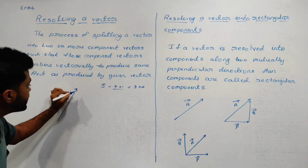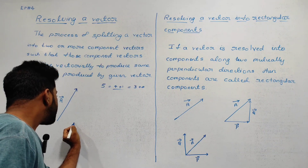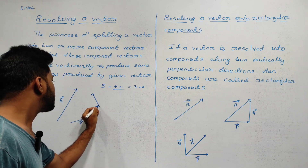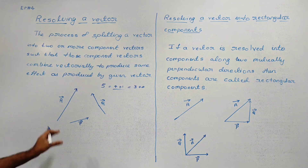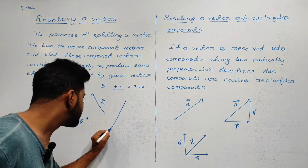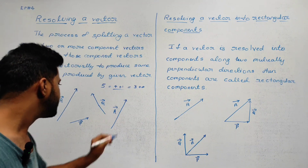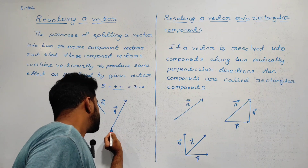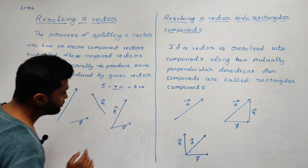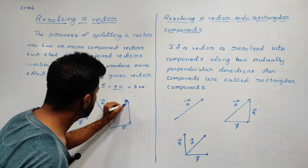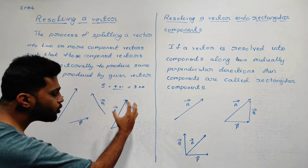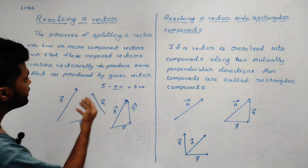For example, this is vector A. What we need to do is consider this vector. We need vector P and vector Q. We need to join vector A as a resultant. We need vector A, vector P, and vector Q — vector A divided into two components, resolved by this.